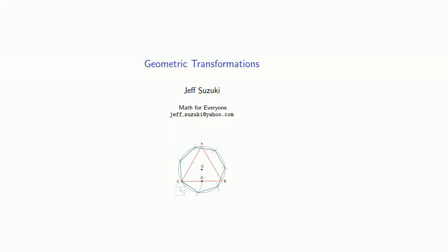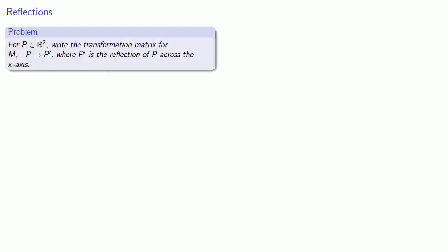One use of transformation matrices is to describe geometric transformations. For example, let's say I have a point in R2 and I want to consider the geometric transformation Mx, which will be the reflection of my point across the x-axis.